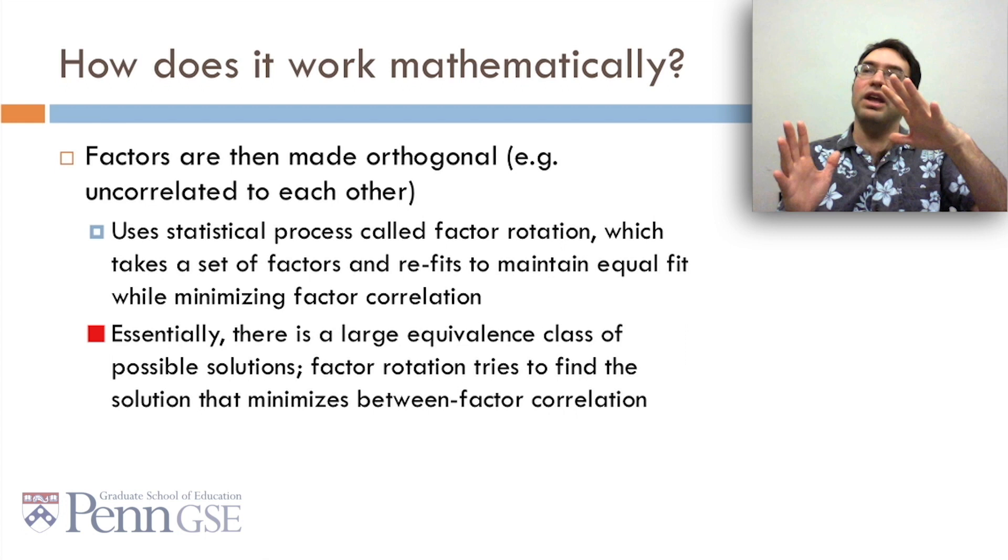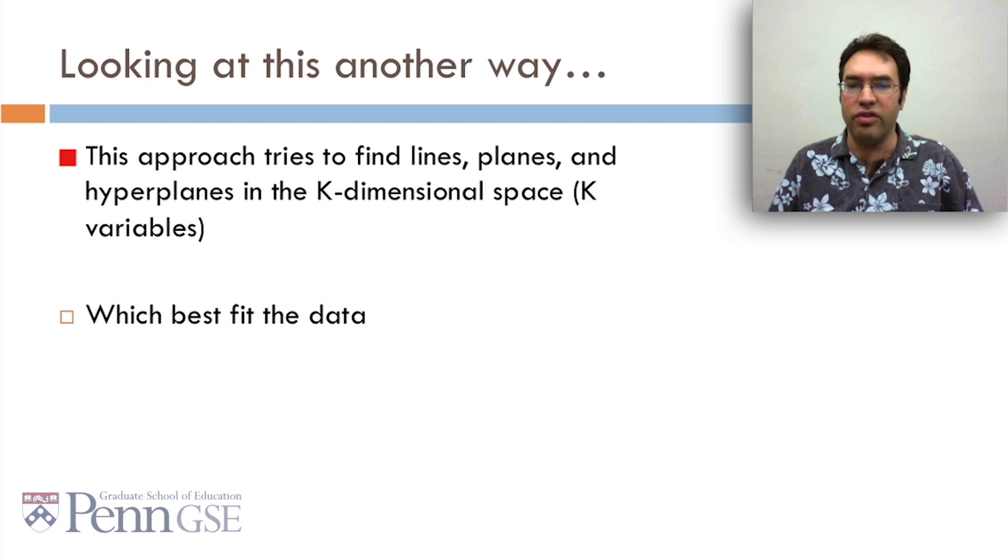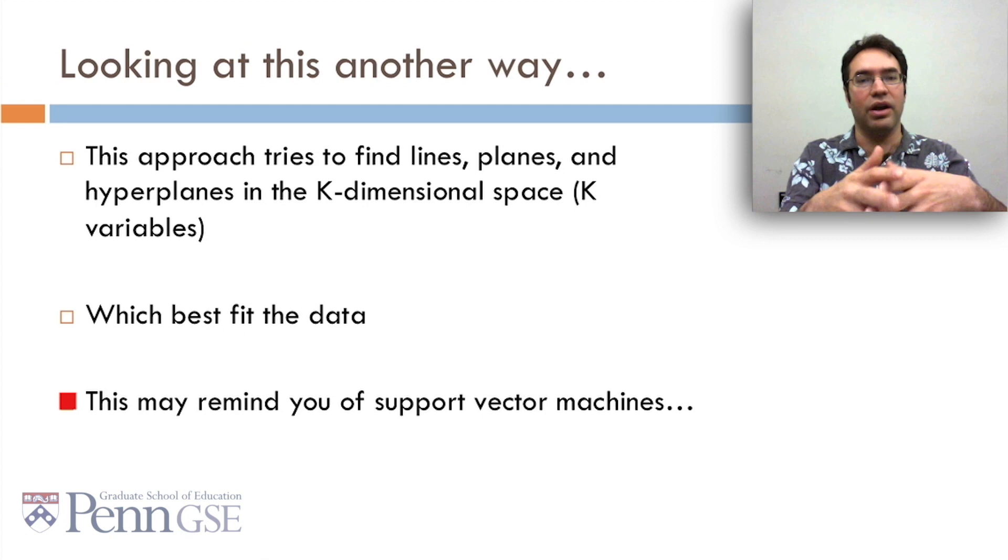Looking at this another way, this approach tries to find lines, planes, and hyperplanes in the k-dimensional space where you have k variables, which best fit the data, which don't fit each other too well. And this may remind you of support vector machines. It may even remind you of spectral clustering. You can see that there are a lot of things in educational data mining where the same math, used in slightly different ways, ends up being very different things.